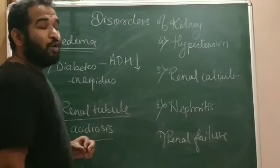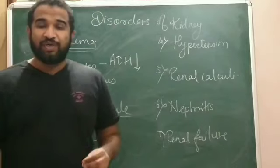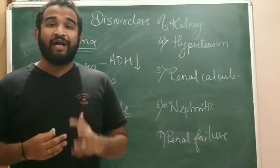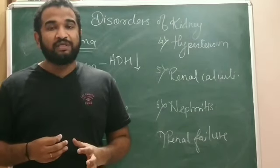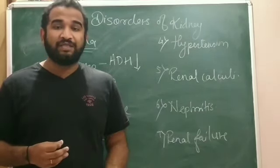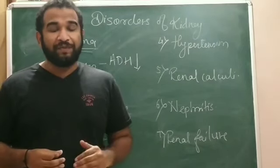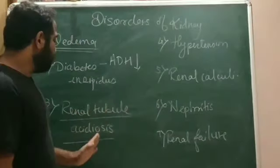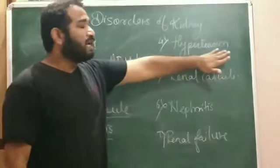The next disorder is renal tubular acidosis. If a person is unable to produce an adequate amount of hydrogen ions, more and more bicarbonate ions (HCO3⁻) are lost from the urine. That condition is called renal tubular acidosis.